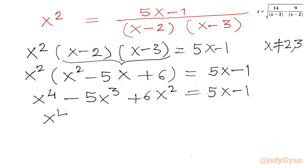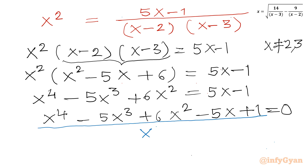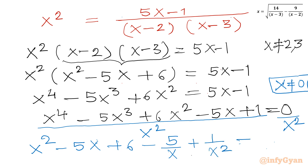Taking all terms to the left-hand side gives x⁴ minus 5x³ plus 6x² minus 5x plus 1 equals 0. Now I will divide both sides by x², since x equals 0 is not a solution of this equation. After dividing I have x² minus 5x plus 6 minus 5 over x plus 1 over x² equals 0.